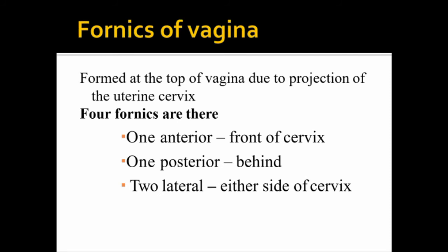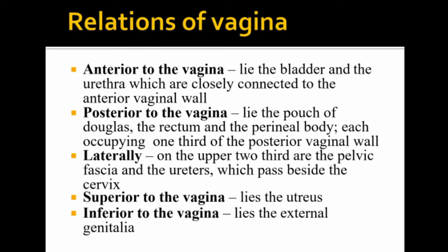The fornices of the vagina include one anterior and one posterior. The relations of the vagina anteriorly include the uterus, and posteriorly include the pouch of Douglas, the perineal body, the posterior bowel, the lower bowel, the pelvic fascia, and the ureters.